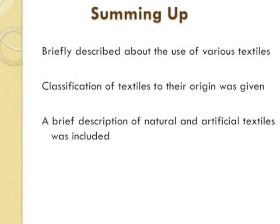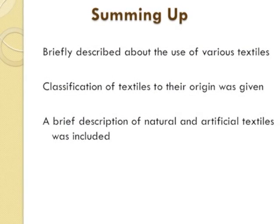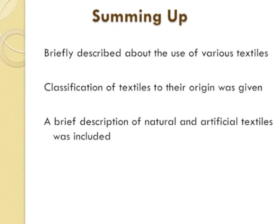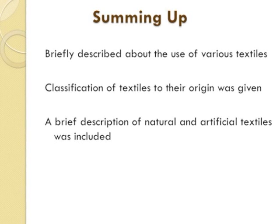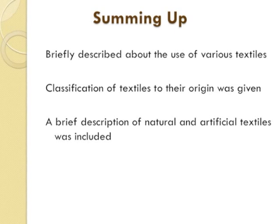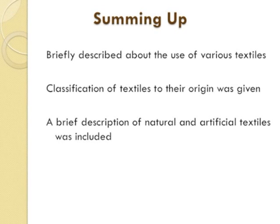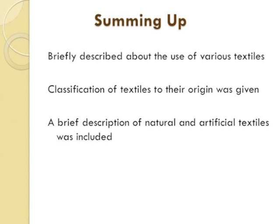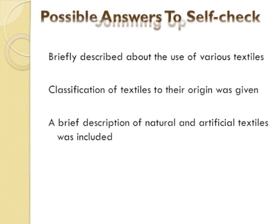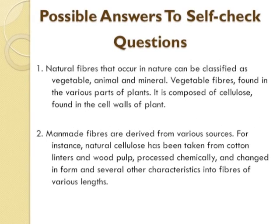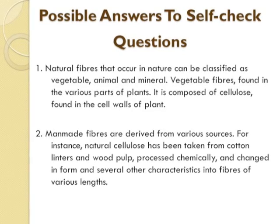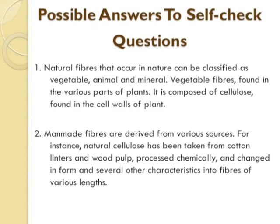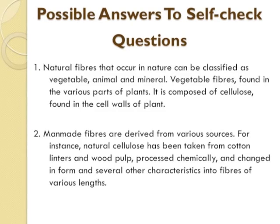Summing up. Today I briefly described the use of various textiles. Classification of textiles according to their origin was given, and a brief description of natural and artificial textiles was also included. I am sure you have all answered the two questions asked of you, but anyway I will give you the answers. The first question was on natural fibers. Natural fibers that occur in nature can be classified as vegetable, animal, and mineral.